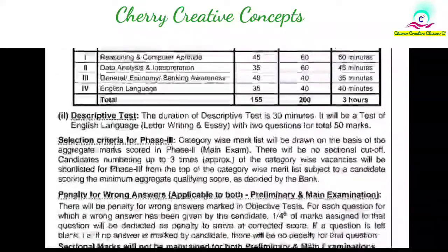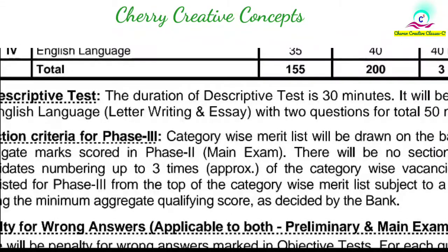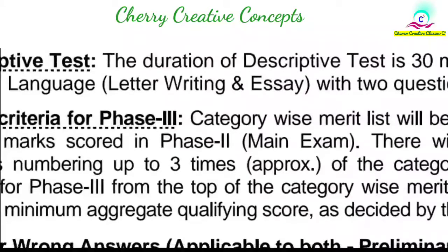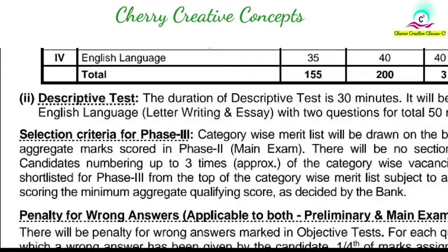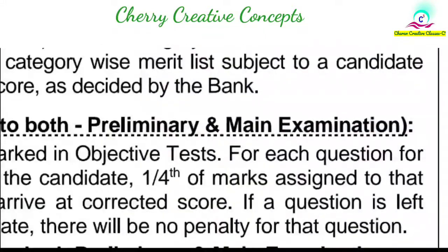The third phase is an interview. After the two exams, the top main-exam qualified candidates — approximately 6000 members (2000 vacancies multiplied by 3) — are called for interview. Regarding negative marking: both the preliminary and main exams have 1/4th negative marking for wrong answers.